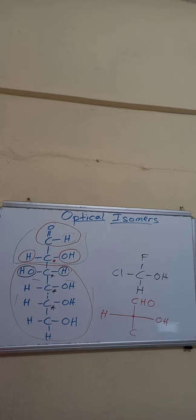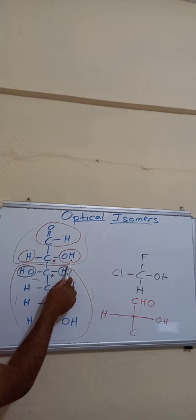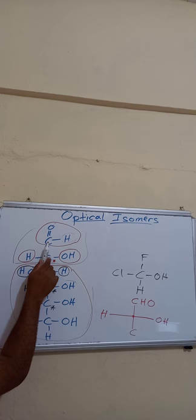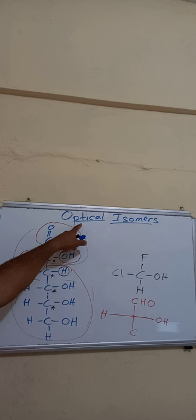To identify groups, draw the carbon and draw four lines — whatever is above, below, left, right are the different groups. So this compound is chiral. Therefore, this compound exhibits optical isomerism. Once you have a chiral carbon, you have optical isomers — that's a chiral molecule.